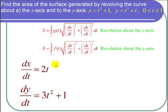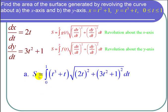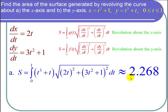Now let's do part a — the surface area generated by revolving the curve around the x-axis. The surface area equals the integral from 0 to 1 of (t cubed plus t) times the square root of (2t) squared plus (3t squared plus 1) squared, dt. Putting that into a calculator gives approximately 2.268.